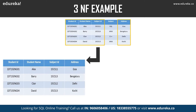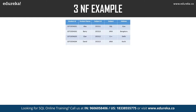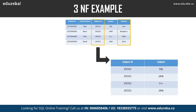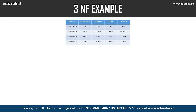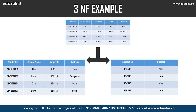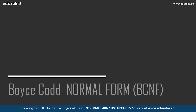To achieve third normal form, we divide the table into two parts. The first table stores student ID, student name, subject ID, and address — all columns referring to the primary key, student ID. The second table has subject ID and subject, where subject is dependent only on subject ID and not on student ID. All non-key attributes are now fully functionally dependent on the primary key of their respective table.